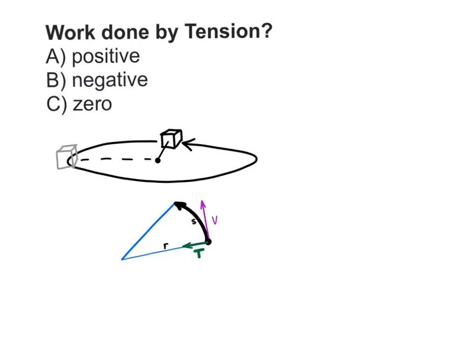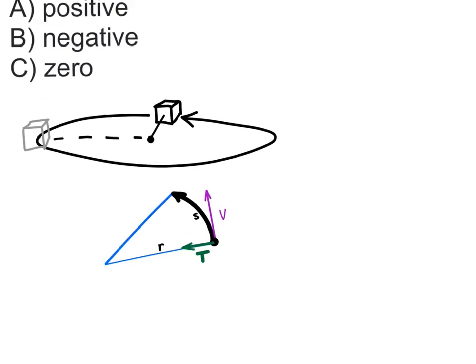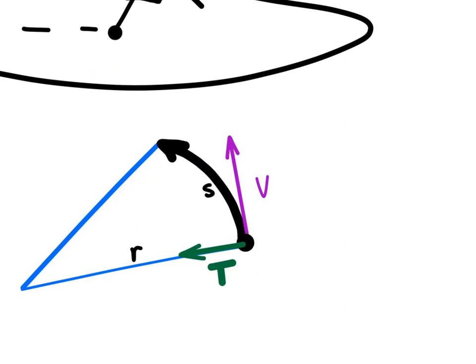If you picked zero, you are correct, because at any given instant, the direction of the force and the direction of the displacement are at a 90 degree angle, and the cosine of 90 degrees is equal to zero.